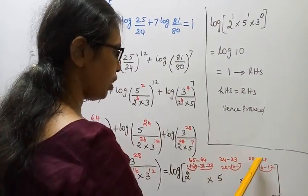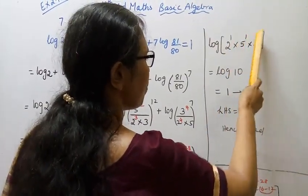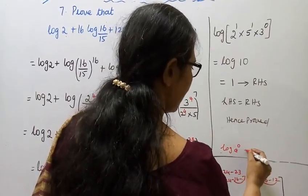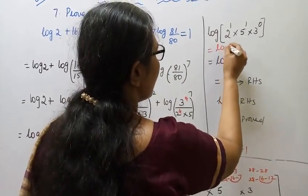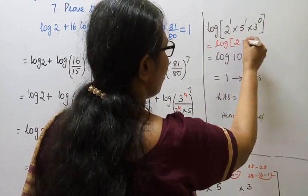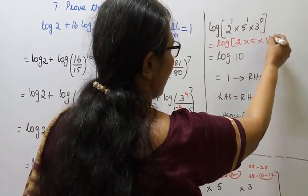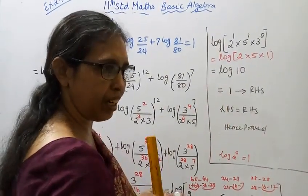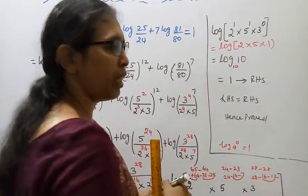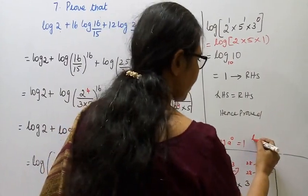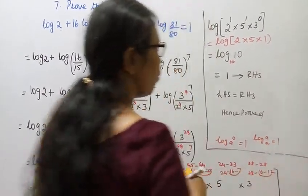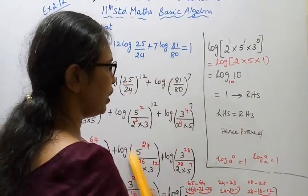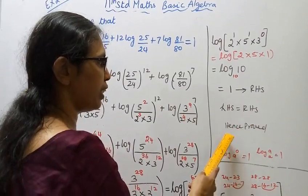So we achieve: 2 power 1 into 5 power 1 into 3 power 0. Anything power 0 equals 1, so 3 power 0 = 1. This gives us log(2 power 1 into 5 power 1 into 1) = log(2 into 5) = log 10. Log base 10 of 10 equals 1. Therefore left hand side equals right hand side, hence proved.